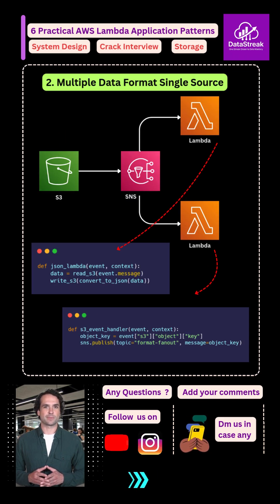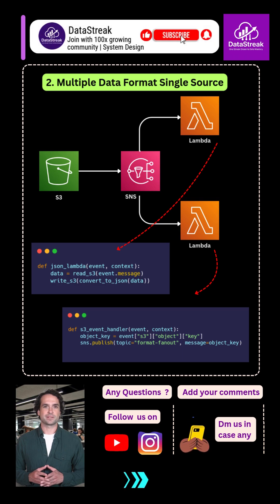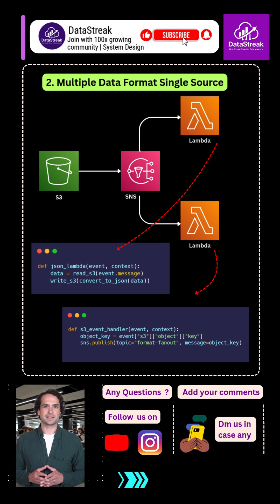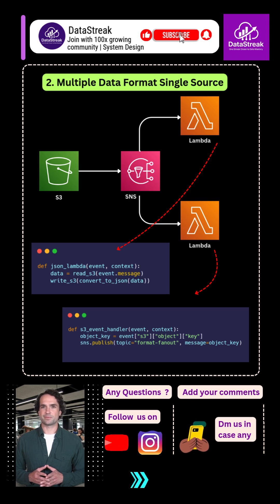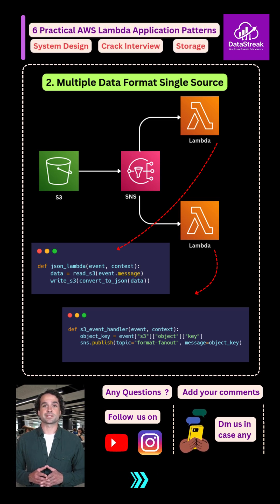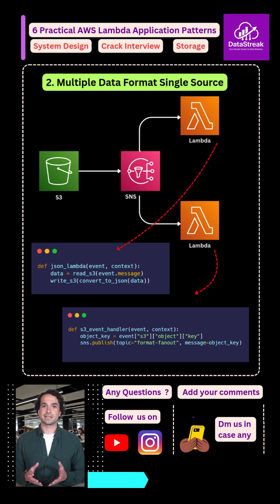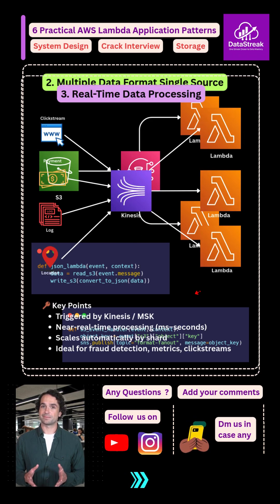Pattern 2: Multiple data formats from a single source. Upload one object to S3. SNS triggers multiple Lambda functions, and each Lambda produces a different output format — CSV, JSON, Parquet. Clean and decoupled.